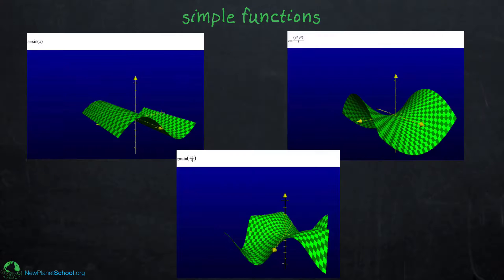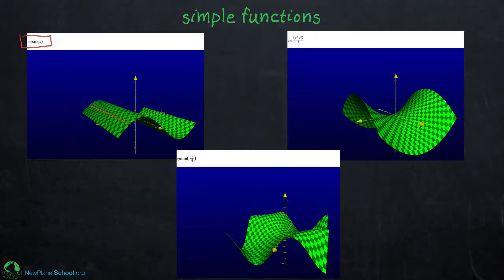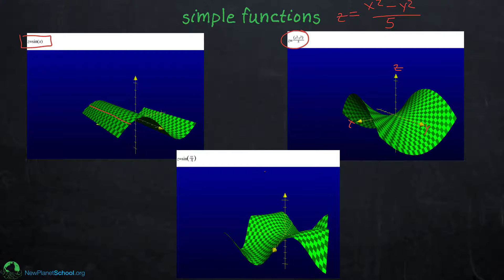Now let's look at some actual functions. The first one is z equals sine(x), which gives a simple sine wave that's constant in y. If I add a y dependence — for example, z equals (x² − y²)/5 — I get something more complicated in x, y, and z directions. Here's another one: z equals sine(xy/2), which gives a very interesting-looking surface.